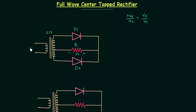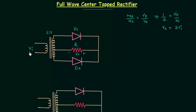Let's say Vp is Vi, the input voltage, and we have to calculate Vs, the voltage on the secondary side. So 1 by 2 equals Vp by Vs, which gives Vs equal to twice Vi, because Vp equals Vi. On the secondary side we have 2Vi total, and because of the center tapping we have Vi on this side and Vi on this side.